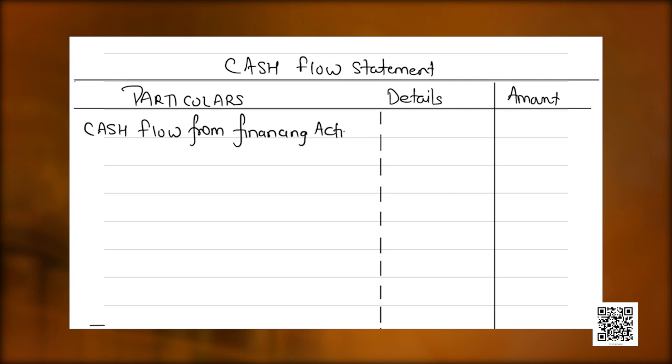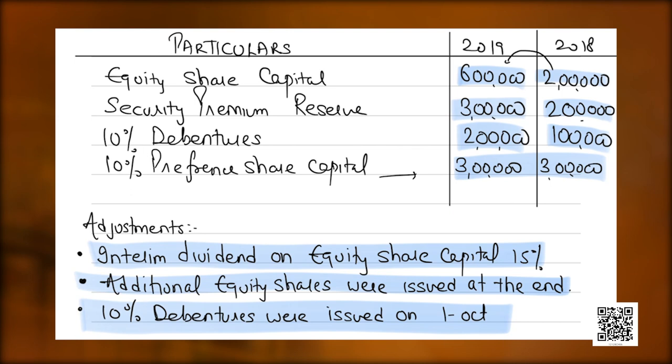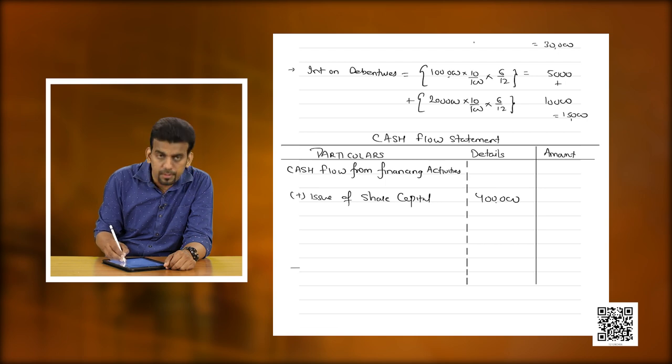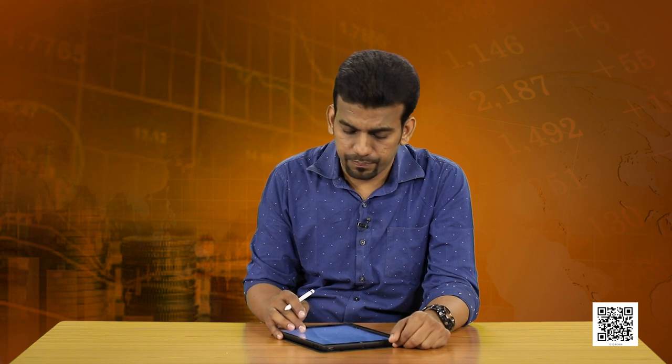Cash flow from financing activities: The first item is equity share capital moving from 2 to 6 lakh — issue of share capital, positive 4 lakh. Then we have dividend, which we calculated as 30,000, and it is an outflow. Here you need to focus on dividend. If you recall the format of cash flow from operating activities, first we calculated net profit before tax and extraordinary items, where we added this dividend. Being an extraordinary item we added it there, but we are subtracting it in cash flow from financing activities.